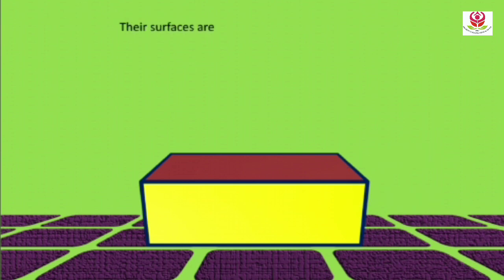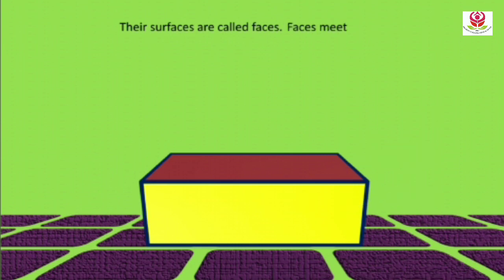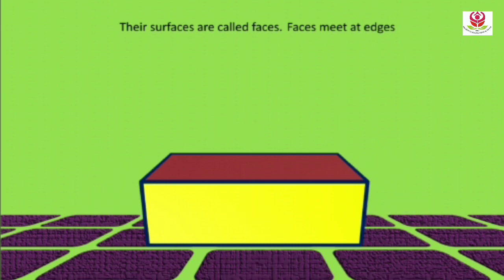The surfaces of solid shapes are called faces. Faces meet at edges, so these are called edges. Edges meet at vertices. Vertices are also known as corners.